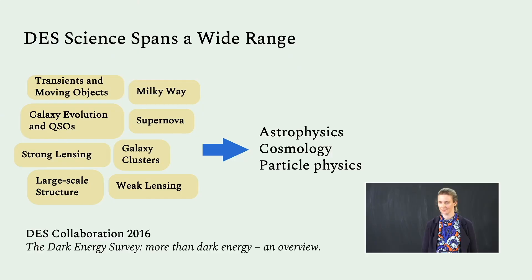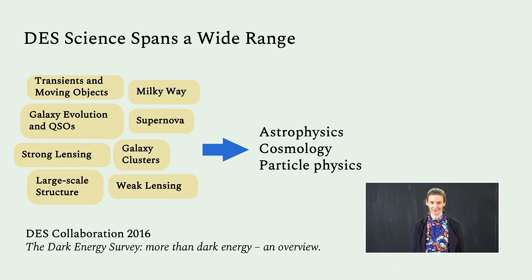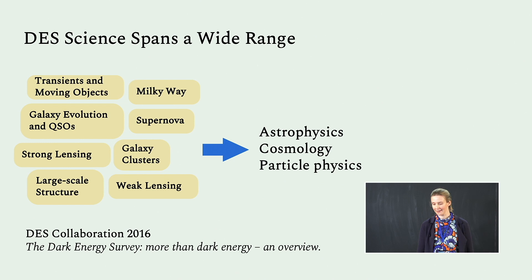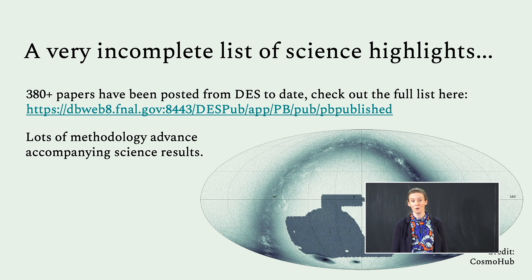While we are called the Dark Energy Survey, we really span a wide range of science with this fantastic dataset. Our science working groups include: Transients and Moving Objects, Galaxy Evolution and QSOs, Strong Lensing, Large-Scale Structure, Milky Way, Supernovae, Galaxy Clusters, and Lensing. In particular I'd like to highlight a 2016 paper, 'The Dark Energy Survey: More than Dark Energy,' which gives a nice overview of all these different science motivations. There have been over 380 papers from DES so far, covering lots of different science cases and methodology advances.